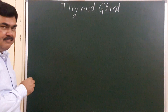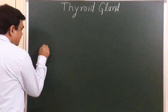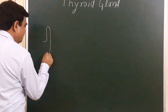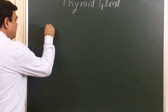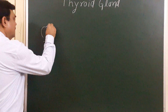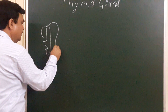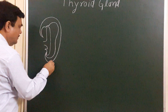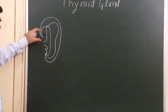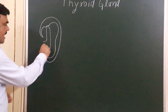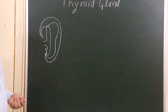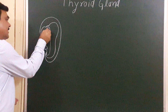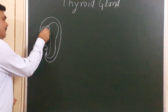During the third week of intrauterine life, after folding of the embryo, you can see in this diagram the developing foregut, midgut, and hindgut. This is the cranial part of the foregut. Here, a series of thickening appears which forms the pharyngeal arches.